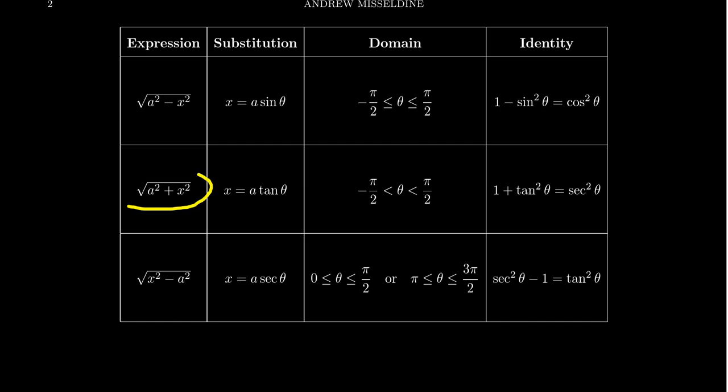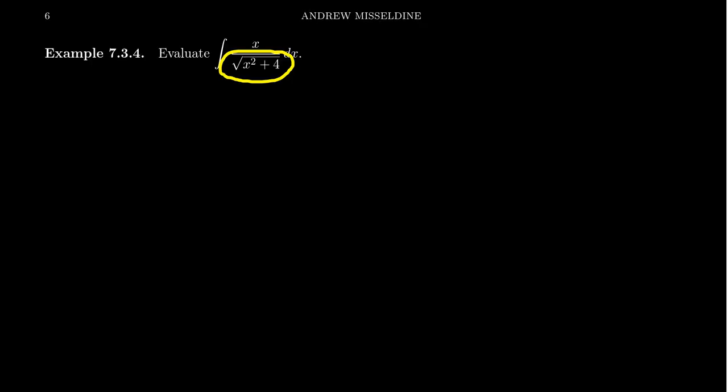if we use the substitution, the second type, that is the tangent substitution, we could set x equals 2 tangent, and we could simplify or convert the integral into trigonometric form from there, and then we could calculate the antiderivative. That's not so bad, right?